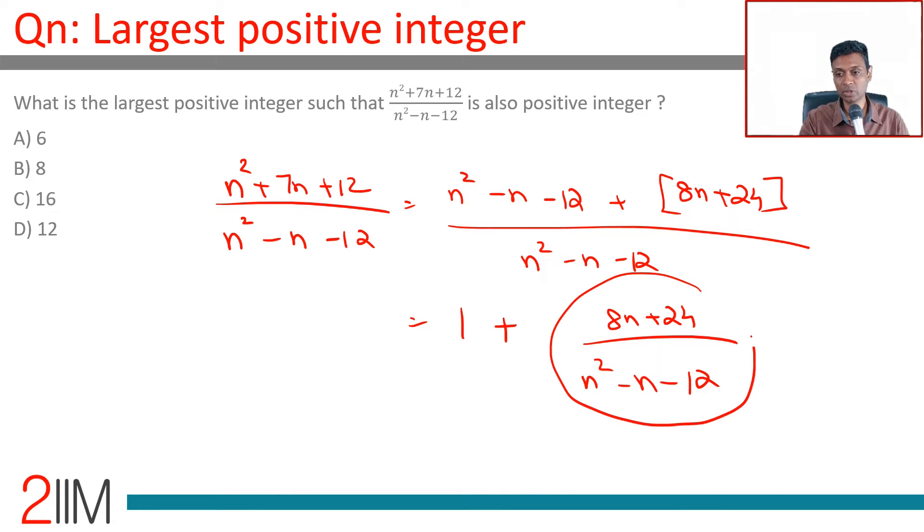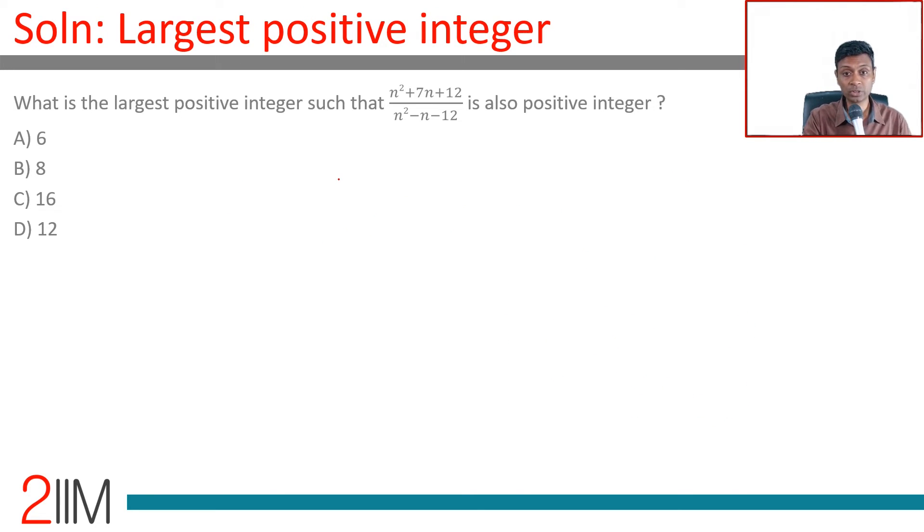Let's look at this. If the whole thing has to be an integer, this has to be an integer. 8n plus 24 is 8 times n plus 3. n square minus n minus 12 is n minus 4 into n plus 3.